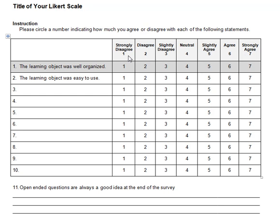We're talking about agreement in this particular Likert scale. So: strongly disagree, disagree, slightly disagree, neutral, slightly agree, agree, or strongly agree — and you're agreeing with each of these statements. For example, if the item is 'the learning object was well organized' and you select a 3 on this scale, it means you slightly disagree with that. That's the basics of the scale.